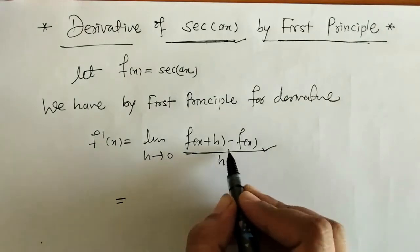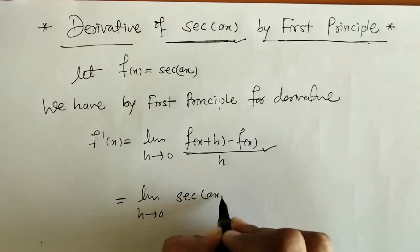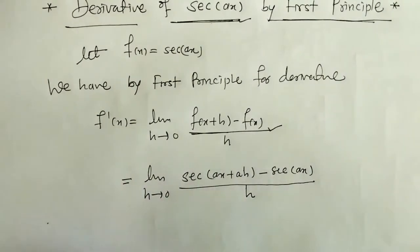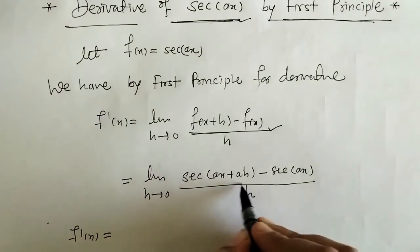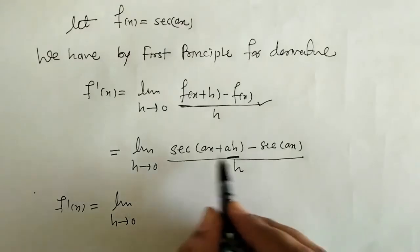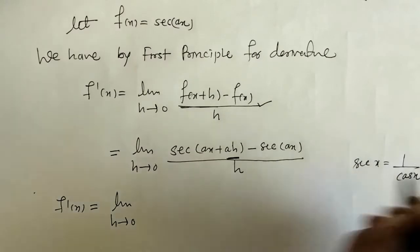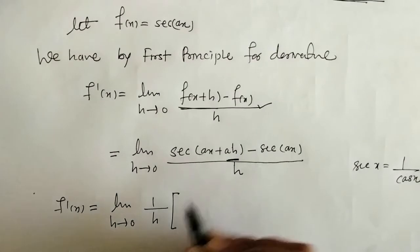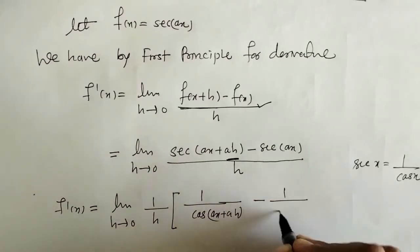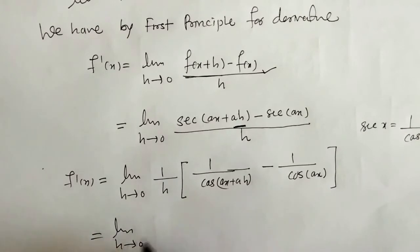We put down the value of f(x+h) and f(x) here. So we have [sec(ax + ah) - sec(ax)] / h. Now we rewrite sec as 1/cos, so this becomes (1/h) × [1/cos(ax + ah) - 1/cos(ax)].